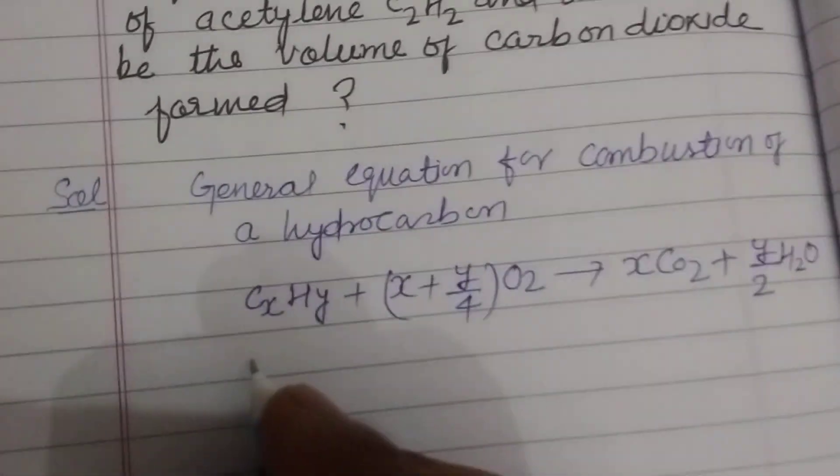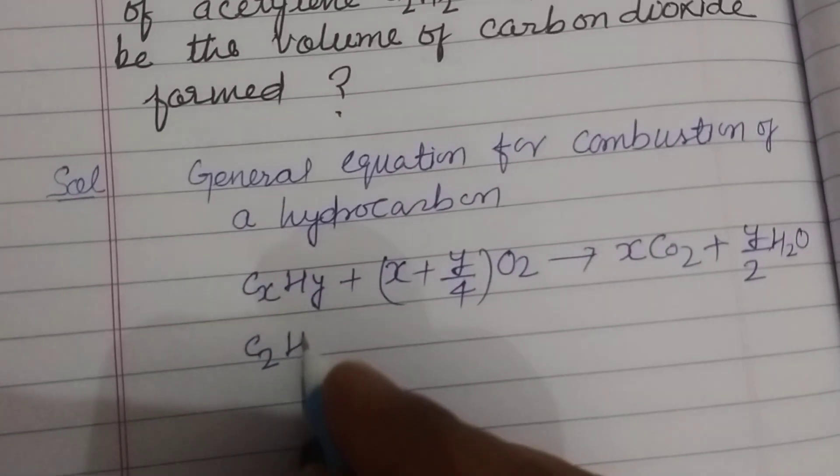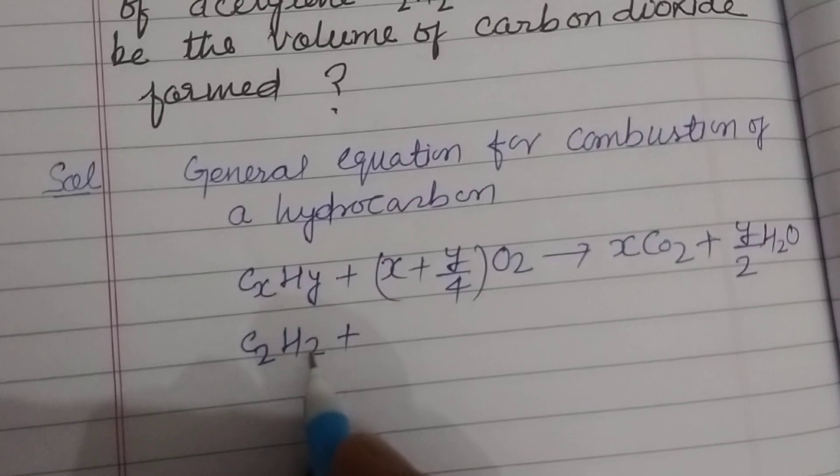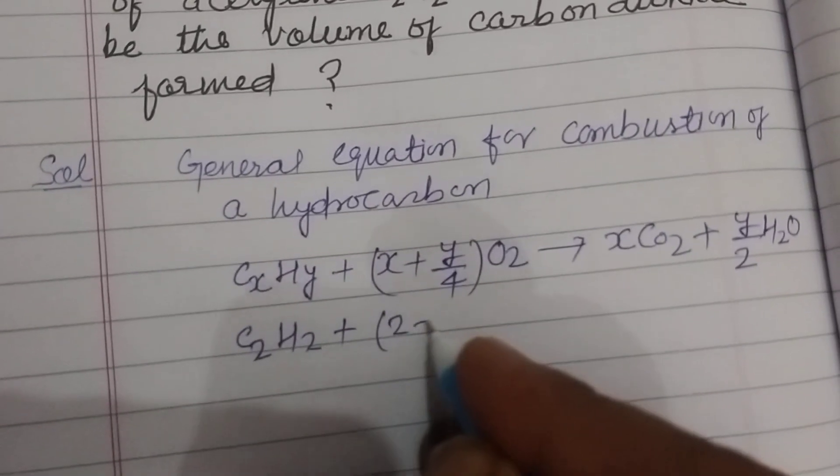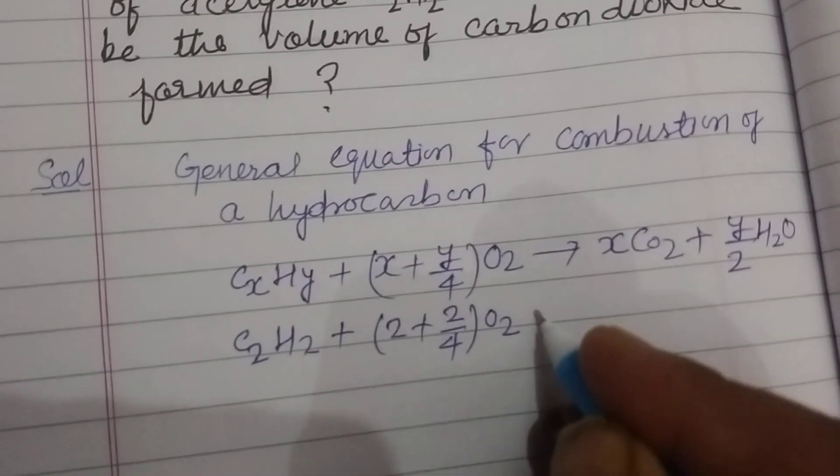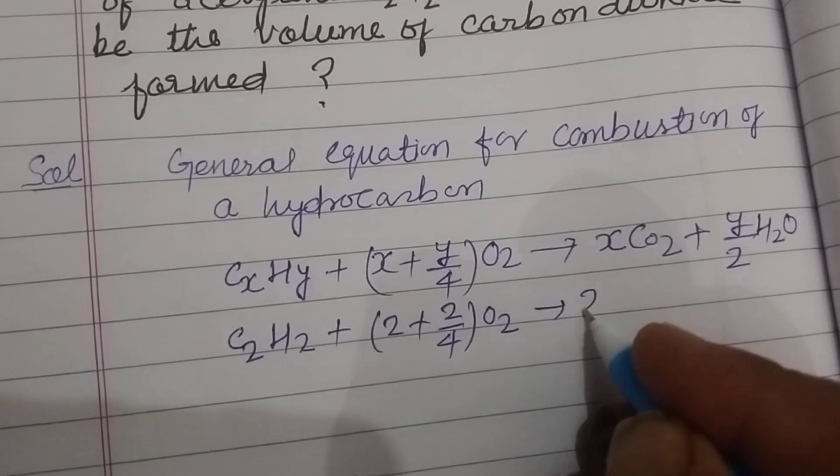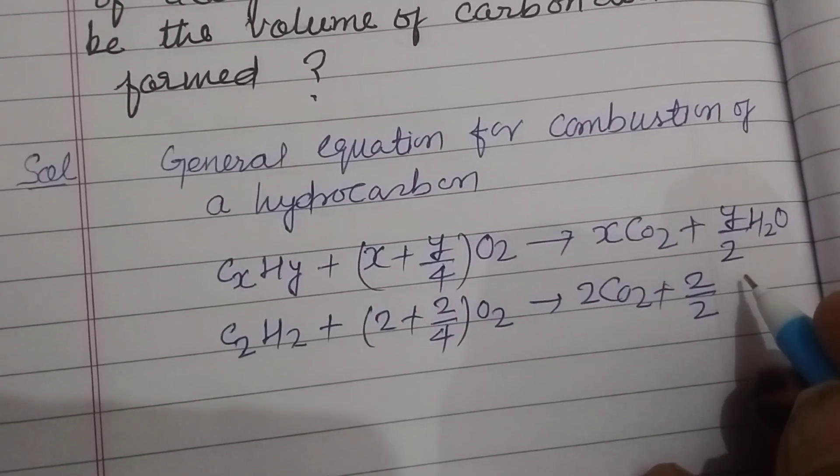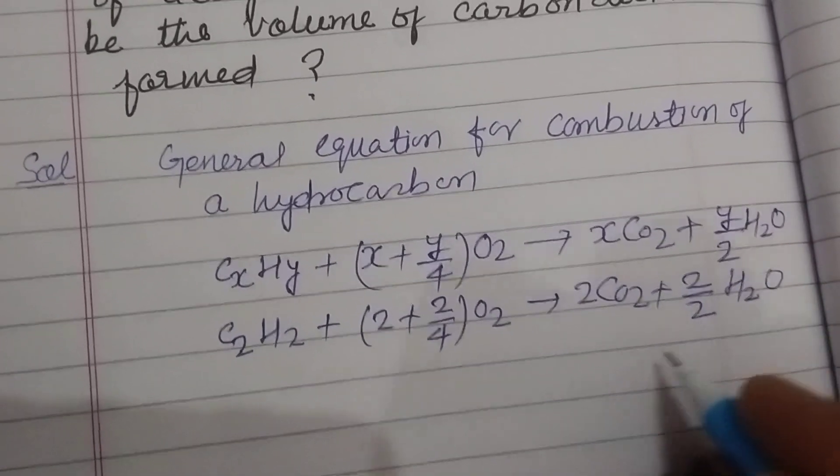For acetylene C2H2, here X is 2, Y is 2, so we put 2, 2/4 O2 equal to 2 CO2 plus 2/2 H2O.